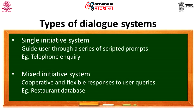We can divide dialogue systems into two types: single initiative systems and mixed initiative systems. In a single initiative system, the system guides the user through a series of scripted prompts — the system asks questions and the user provides answers. In a mixed initiative system, both the system and human have equal roles in turn-taking; they are cooperative and responses are flexible according to the user's queries. Examples include available systems that handle restaurant or weather domains.